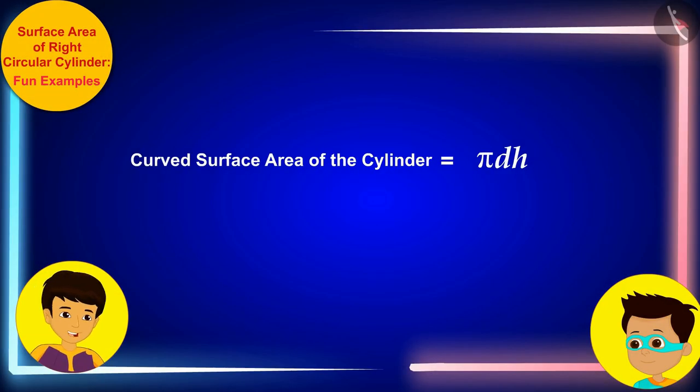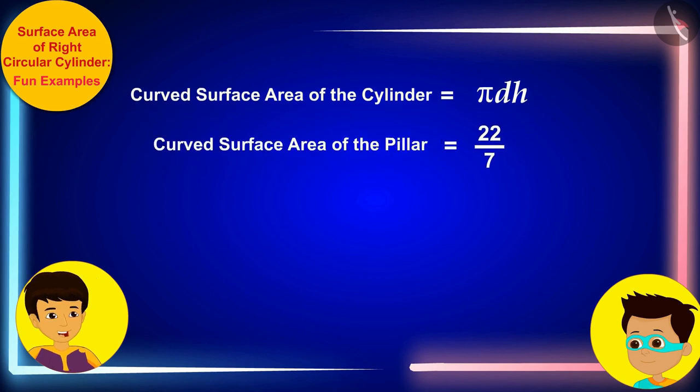Well done, Thomas. Now, we have to write the diameter of the pillar 35 centimeter in place of d and the height of the pillar 3 meter or 300 centimeter instead of h respectively and solve.